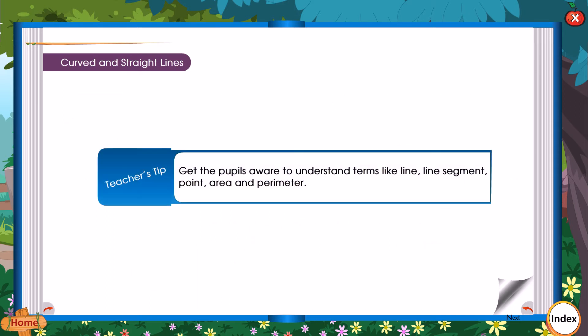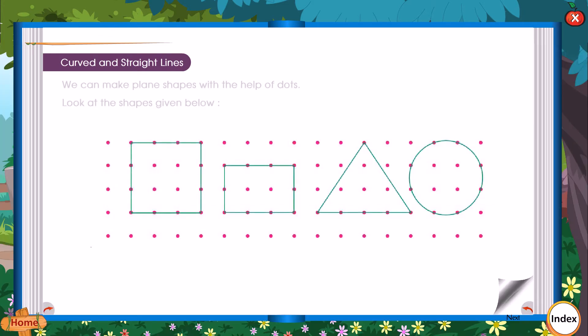Teacher's Tip: Get the pupils aware to understand terms like line, line segment, point, area and perimeter. We can make plane shapes with the help of dots. Look at the shapes given below.